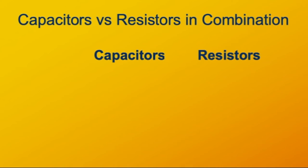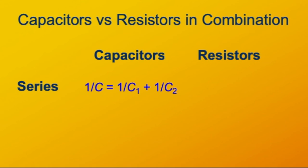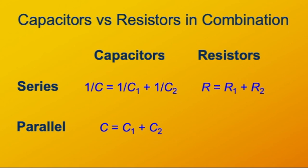Now we can compare and contrast how capacitors and resistors behave in circuits when they're in series and in parallel. These properties come from the same Kirchhoff's rules. We have differences in how they behave because of differences in the way capacitance and resistance relate to voltage. When capacitors are in series, the reciprocals of their capacitances add to give the reciprocal of the equivalent capacitance. With resistors, the individual resistances add to give the total resistance. In parallel, for capacitors, it's the individual capacitances that add up to give the capacitance of the group. For resistors, it's the reciprocals of the individual resistances that add together to give the reciprocal of the total equivalent resistance.